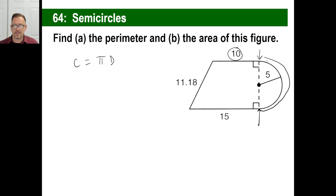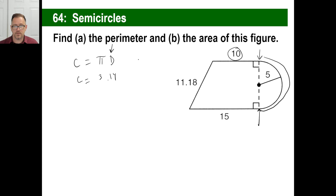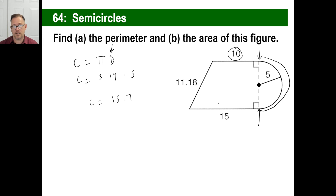Since we're only going around half of a circle, instead of multiplying by the diameter, we're going to multiply by what? What's half a diameter called? Radius. So all you need to do is: the circumference of half of that circle is pi — 3.14 — times not the diameter but the radius, which is 5. If you did the arithmetic, you'd find that the circumference is 15.7. You add that to the other sides, and boom, you've got it.